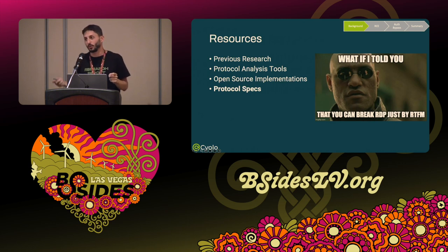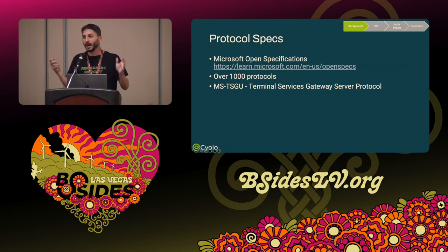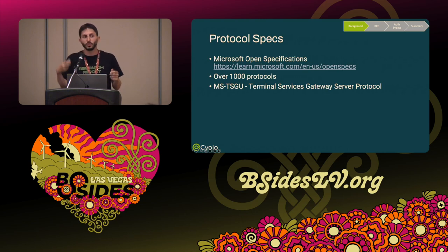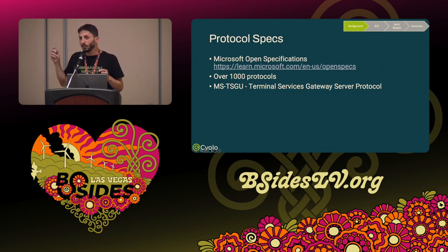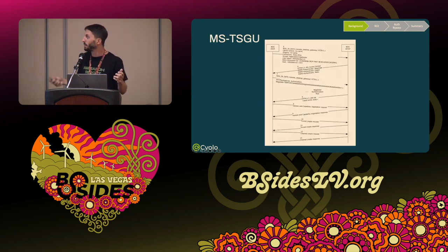The one thing we used the most was protocol specs. Microsoft releases on their website a list of PDFs for over 1,000 protocols they use in their systems, and one of them is the RDP protocol. One of those specs is the RDP Gateway protocol spec called MSTSGU — the Terminal Services Gateway Server Protocol. We just read that protocol, and this is a small glimpse of how it works.